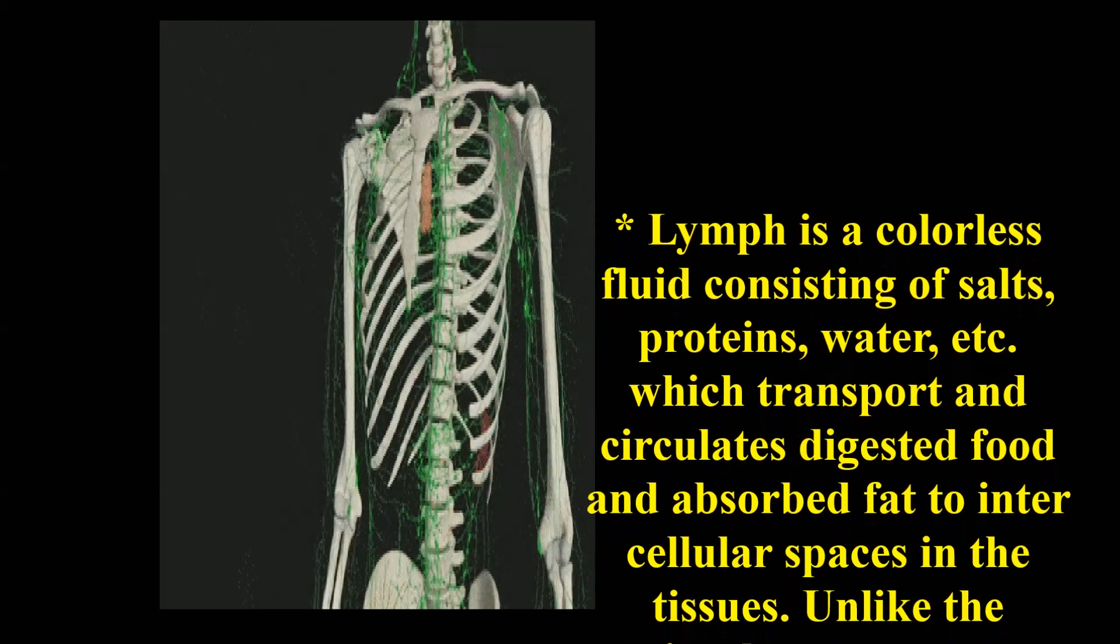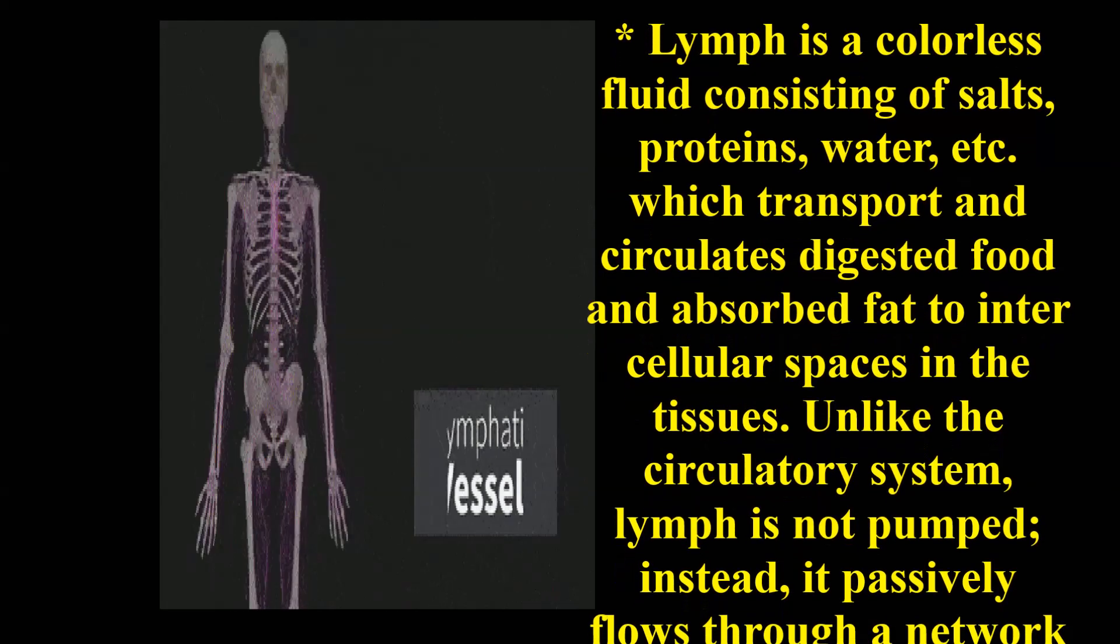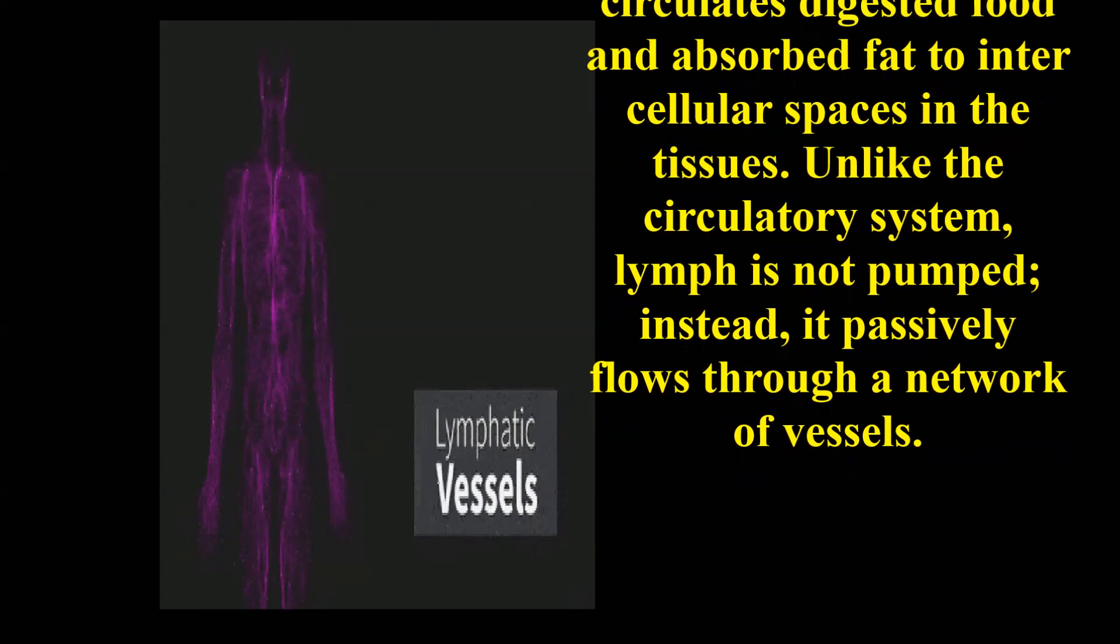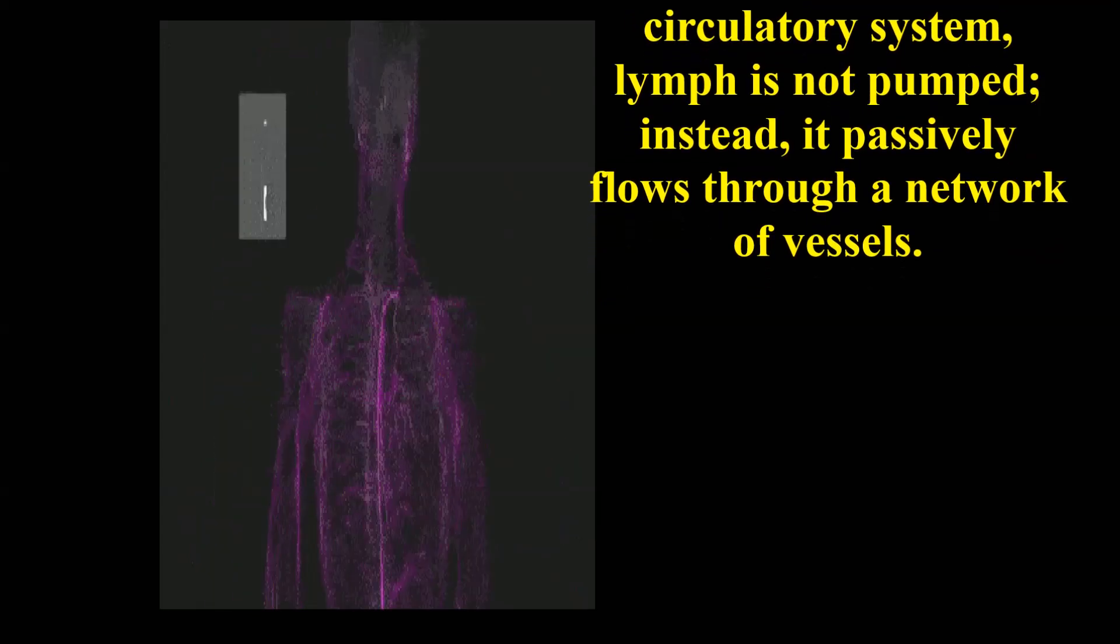Lymph transports and circulates digested food and absorbed fat to intercellular spaces in the tissues. Unlike the circulatory system, lymph is not pumped; instead, it passively flows through a network of vessels.